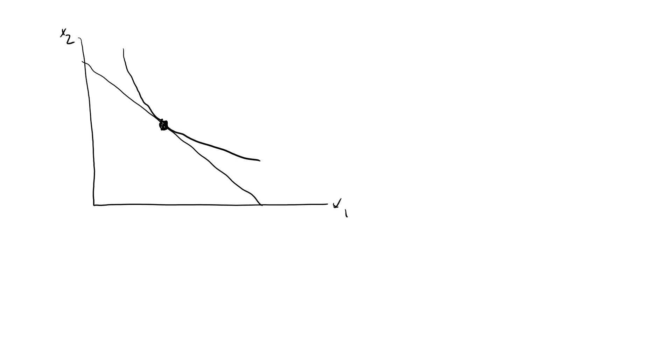So we know that with well-behaved preferences and smooth indifference curves, an interior bundle can only be optimal if the slope of the indifference curve is equal to the slope of the budget line at this bundle.